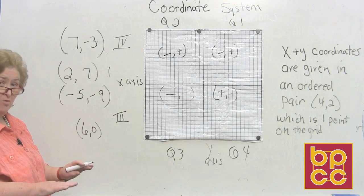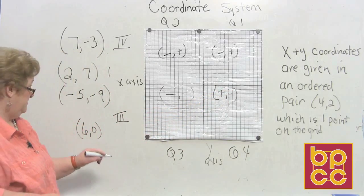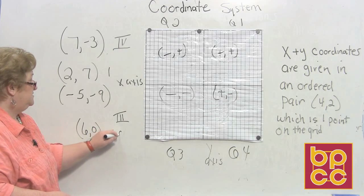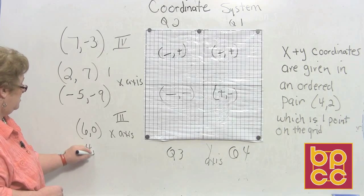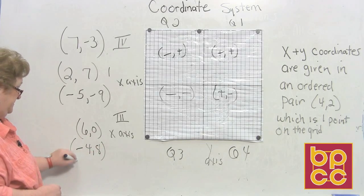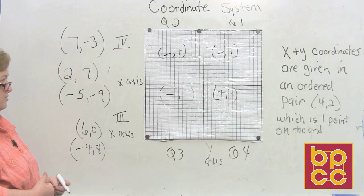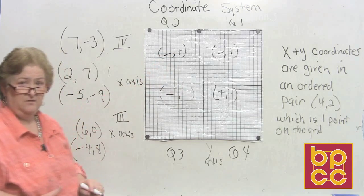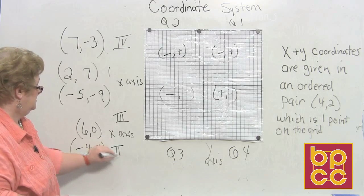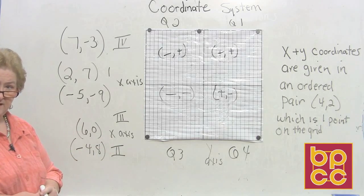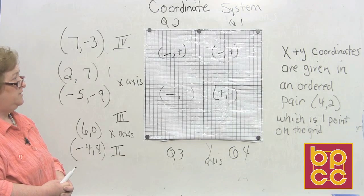For (6, 0): move over six positive on the x and hold — so we land on the x-axis. For (-4, 8): move left four, then go up eight — that's quadrant II.